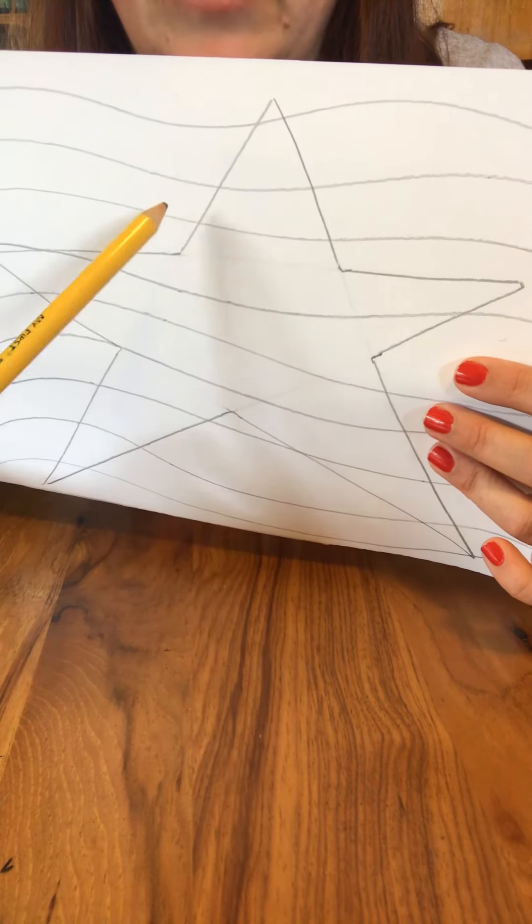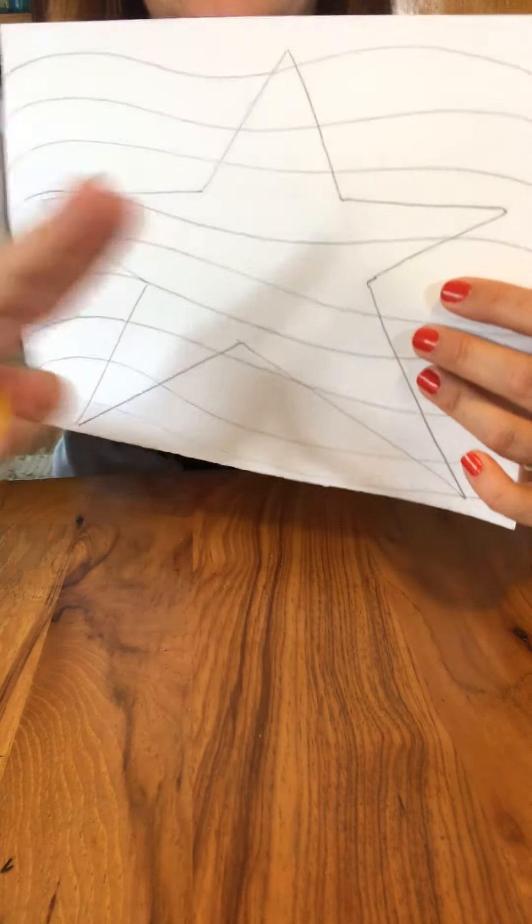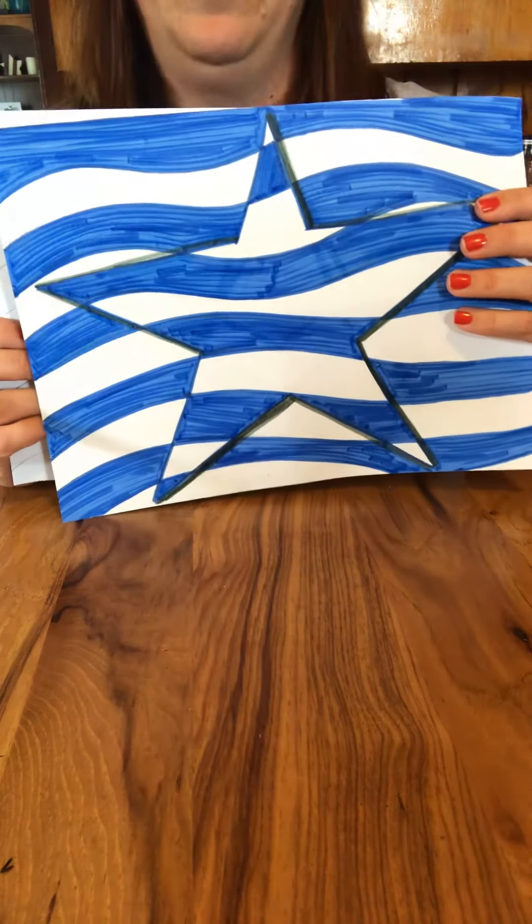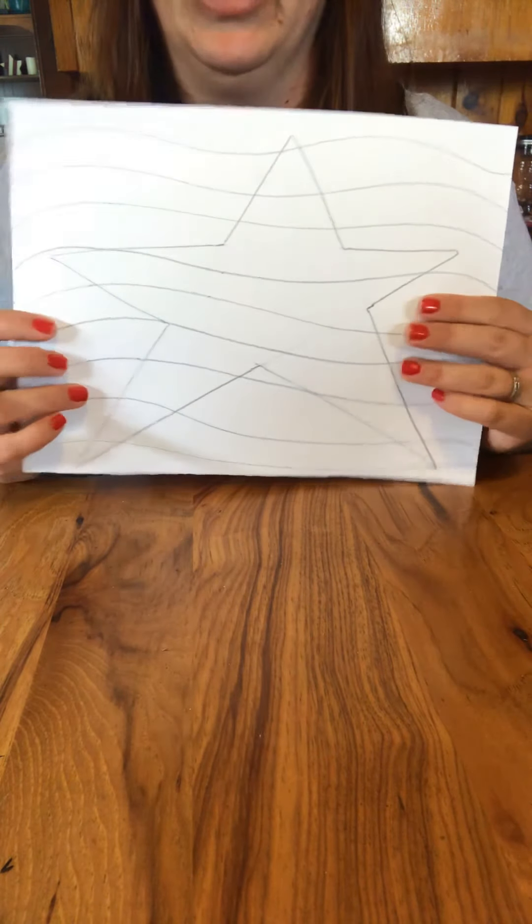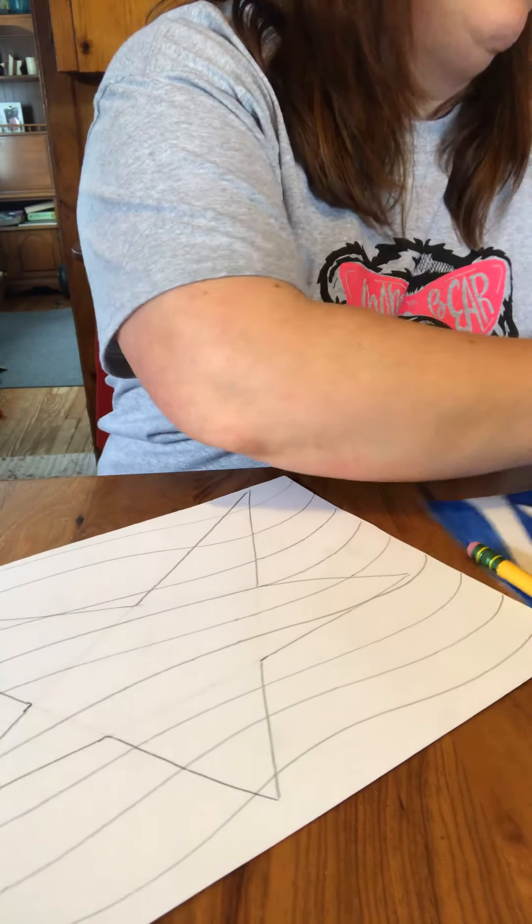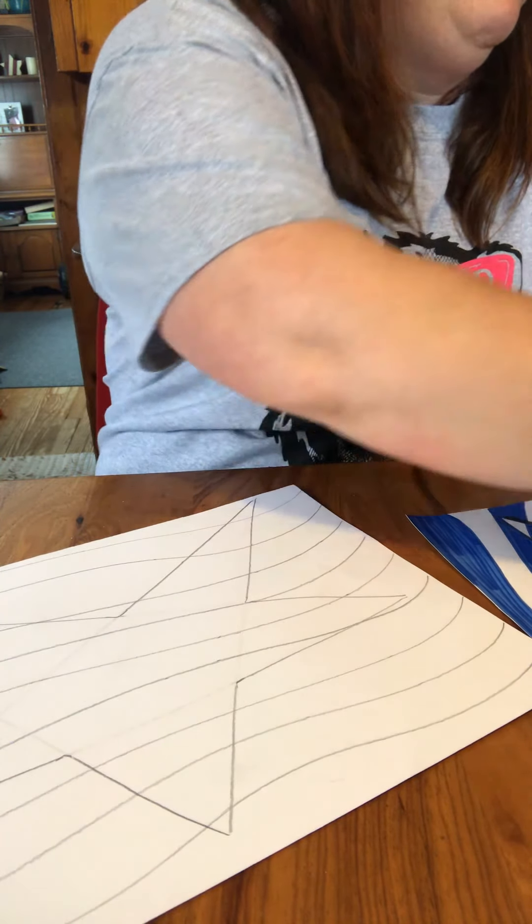So every other box is a different color. No two boxes next to each other should be the same color. So what I did when I colored mine is I took my blue marker and I put a dot wherever blue was supposed to go. So I can show you what I mean.